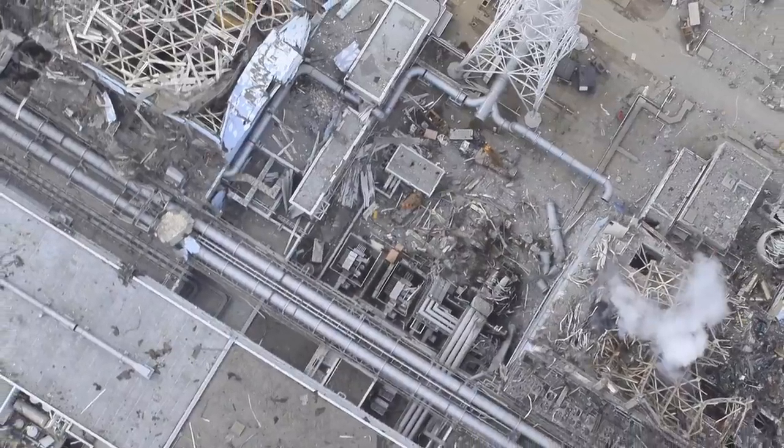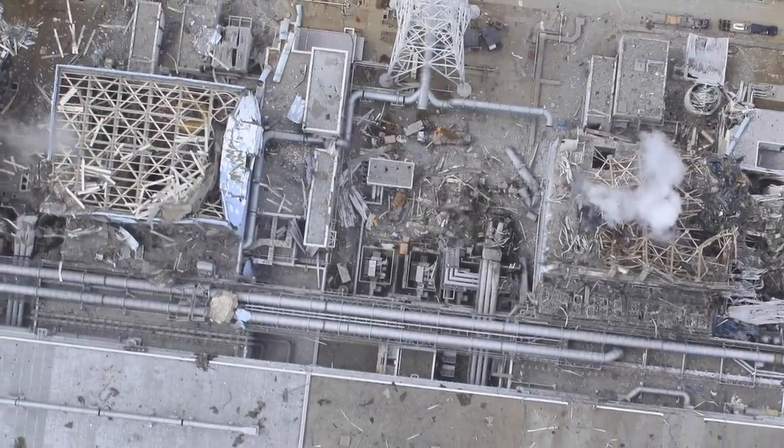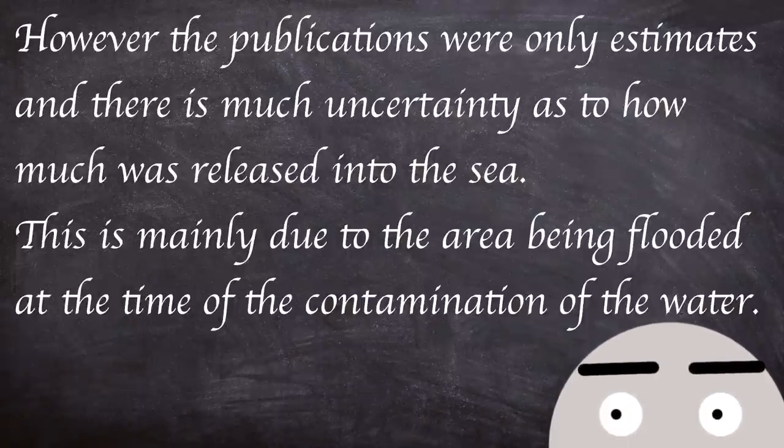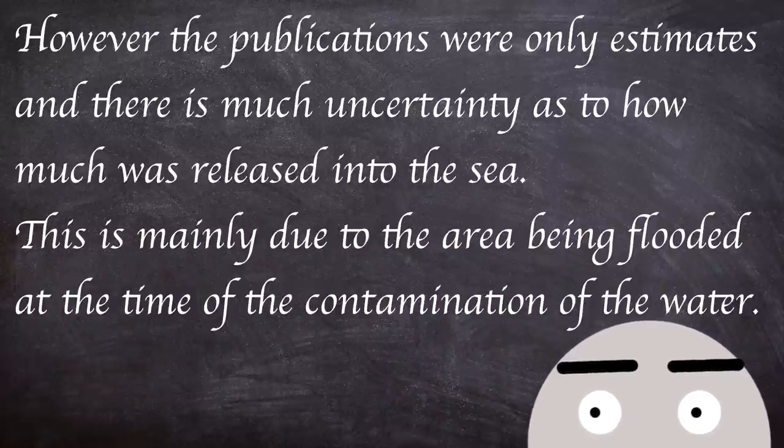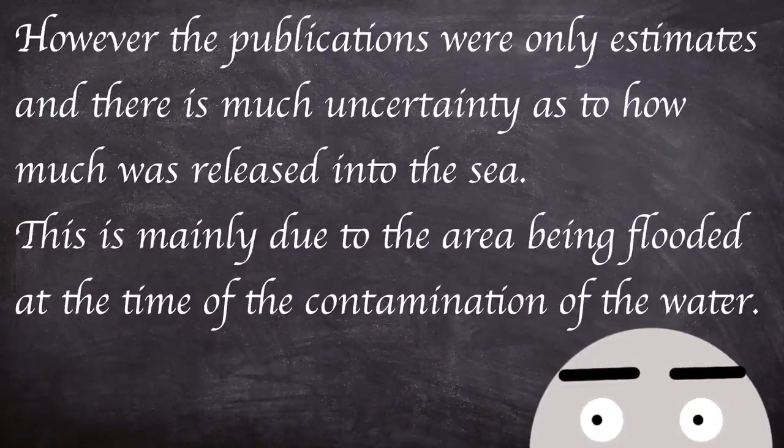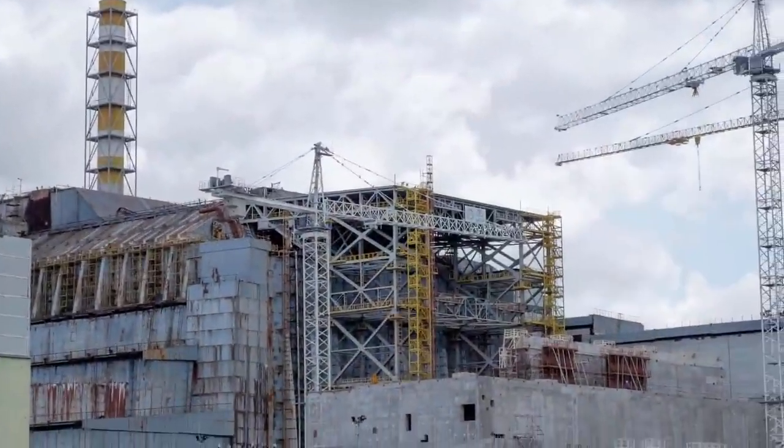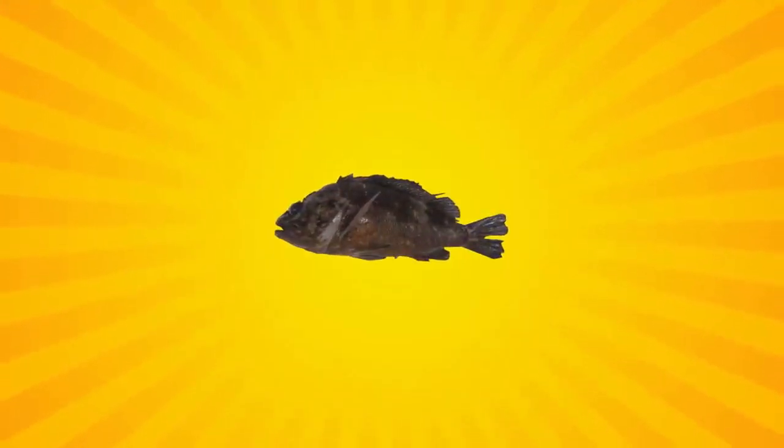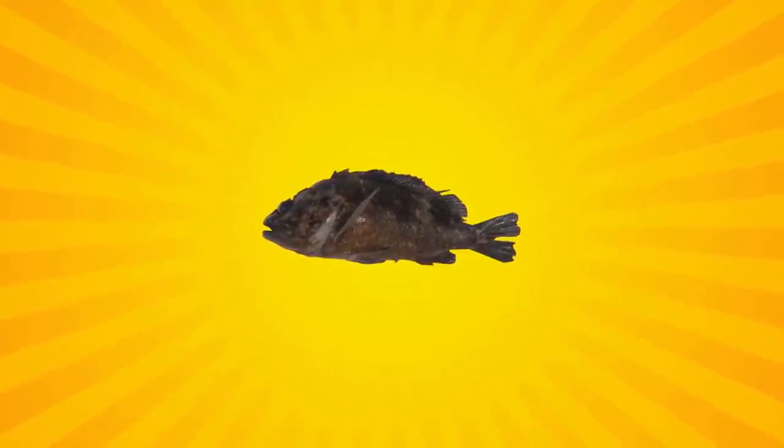The release into the ocean came from the water pumped into reactors during the forced cooling which had subsequently been contaminated by the damaged reactor cores. However, the publications were only estimates and there is much uncertainty as to how much was released into the sea. This is mainly due to the area being flooded at the time of the contamination of the water. It was estimated that Fukushima released around one-tenth of the contamination of Chernobyl. Tests on caught fish around the area were shown to have the same levels of contamination in 2012 as had post-accident in 2011, hinting at a more prolonged release of contaminants into the ocean.